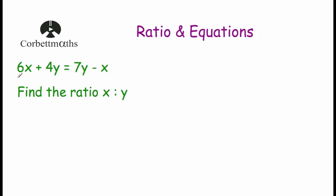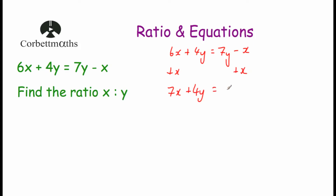Our last question: 6x plus 4y equals 7y minus x. Find the ratio of x to y. First, collect all x terms on one side and y terms on the other. Add x to both sides: 7x plus 4y equals 7y. Then subtract 4y from both sides: 7x equals 3y. Now swap the coefficients: for x, use the coefficient of y which is 3; for y, use the coefficient of x which is 7. So the ratio of x to y is 3 to 7.